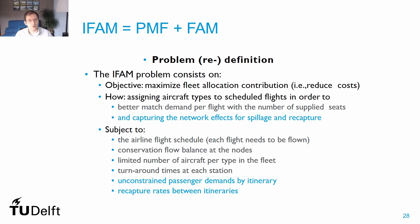If we redefine our fleet allocation problem, we still want to minimize costs — now coming from the spillage of passengers and also from the allocation of aircraft types to flights — but we now have the possibility to consider spillage and recapture options from our passenger mix flow problem. In terms of constraints, we must consider the airline fleet schedule, conservation of aircraft flow at each node in our time-space network, flight limitations, turnaround times per aircraft type, and the unconstrained demand and recapture rates per itinerary.